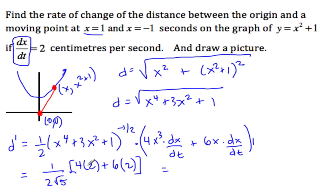So that's equal to 8 + 12, which is 20. Divide by 2 is 10/√5. And what are we talking about? The distance, so that's meters per second.